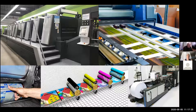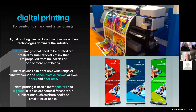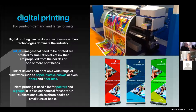Digital printing is for more print-on-demand and large format work. Two technologies dominate: number one is inkjet. What you probably have at home is a tiny desktop machine. Images are created by small droplets of ink propelled from nozzles of one or more print heads — you've probably experienced your printer getting clogged and not printing right. Inkjet devices can print on a wide range of substrates such as paper, plastic, canvas, or even doors and floor tiles. Sometimes they use outdoor latex ink so it doesn't fade, and inkjet is used a lot for posters and signage.